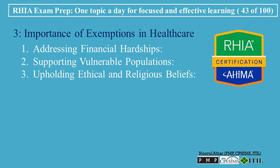Upholding Ethical and Religious Beliefs: Exemptions allow both healthcare providers and patients to opt out of specific medical services or procedures that conflict with their ethical or religious beliefs, ensuring that healthcare remains respectful of individual values while maintaining compliance with broader healthcare policies. Promoting Access to Care in Rural Areas: Critical Access Hospitals (CAH) may be exempt from certain regulatory requirements to keep their doors open, helping maintain operations and meeting the unique needs of remote and underserved communities.